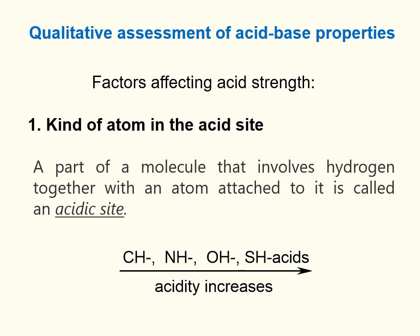The strength of acids can be estimated by their structure. Factors affecting acid strength: firstly, the kind of atom at the acid site. A part of a molecule that involves hydrogen together with an atom attached to it is called an acidic site. There are C–H, N–H, O–S–H acid types, and acidity increases in this series.